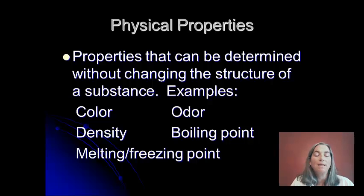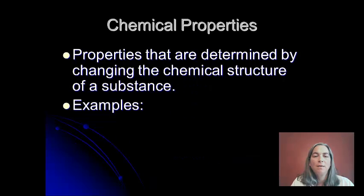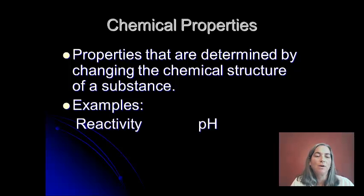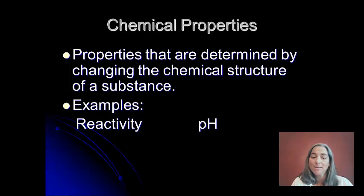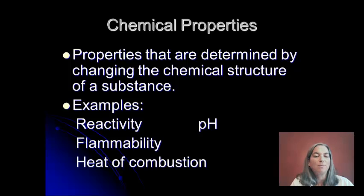Boiling point and melting or freezing point, and we'll talk a little bit more about those. With chemical properties, those properties have to be determined by actually changing the chemical structure. So things like reactivity — if we want to figure out the reactivity of something, the way to do that is to react it with something. Things like pH, flammability, so we'd have to burn the substance, or heat of combustion. So there are lots of different properties; these are just a few.